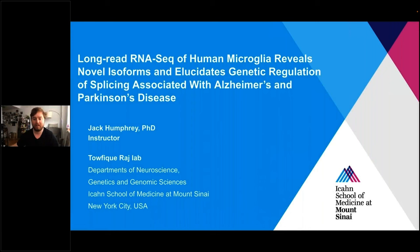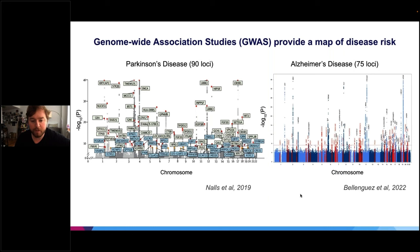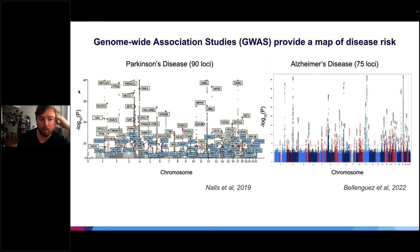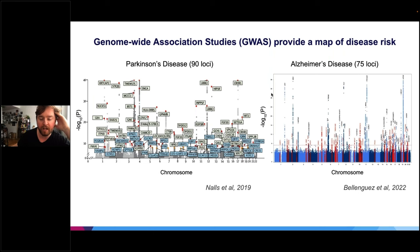Hi, I'm Jack Humphrey, a junior faculty member at Mount Sinai working with Towfik Raj in the neuroscience and genetics departments. Today I'll talk about our long-read work in human microglia, looking at Alzheimer's and Parkinson's disease. There's been tremendous progress on genome-wide association studies in both diseases, with many loci now associated with disease risk. Manhattan plots show each dot as a genetic variant, with P-values on the Y-axis showing association between disease risk and allele frequency changes. However, GWAS alone does not tell you the exact risk gene, the cell types involved, or the pathways — additional functional genomics work is needed.